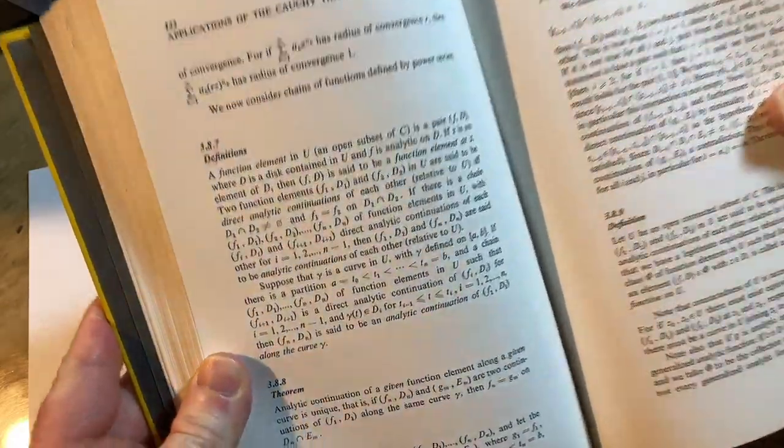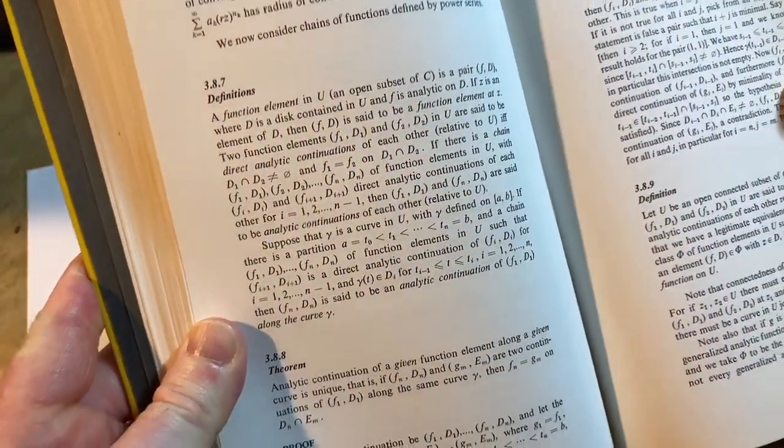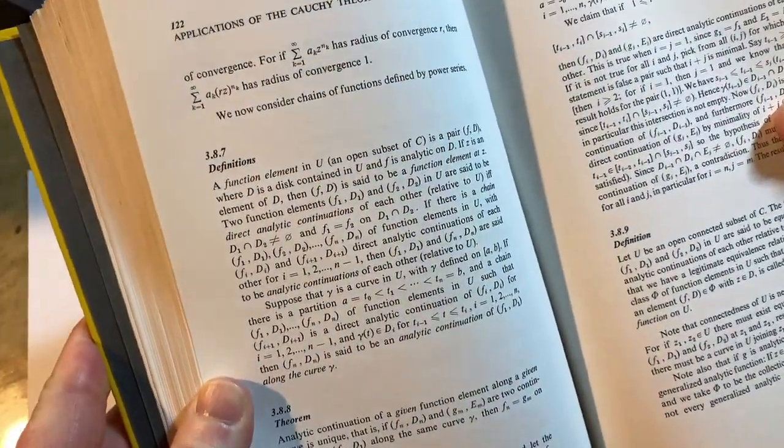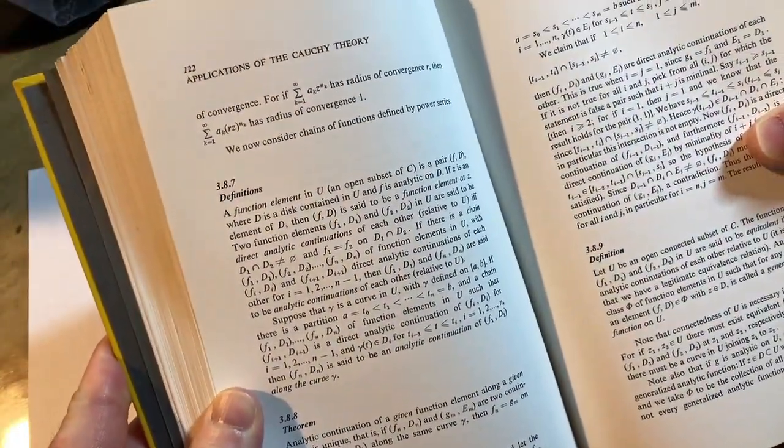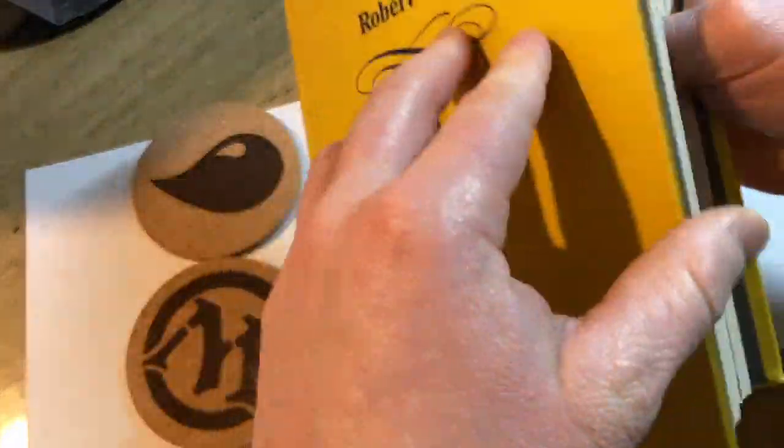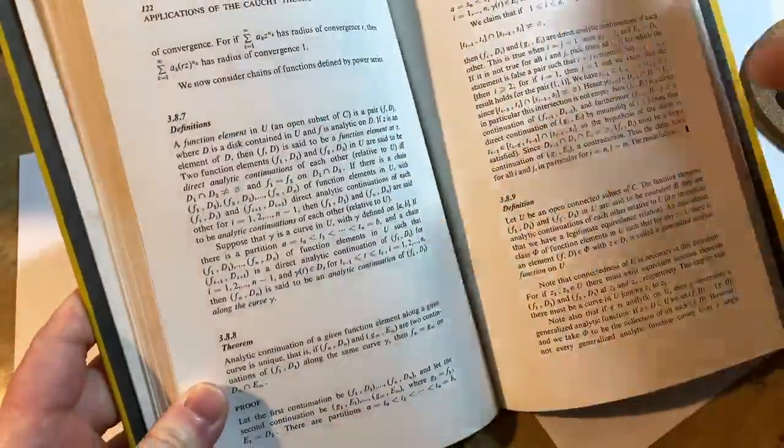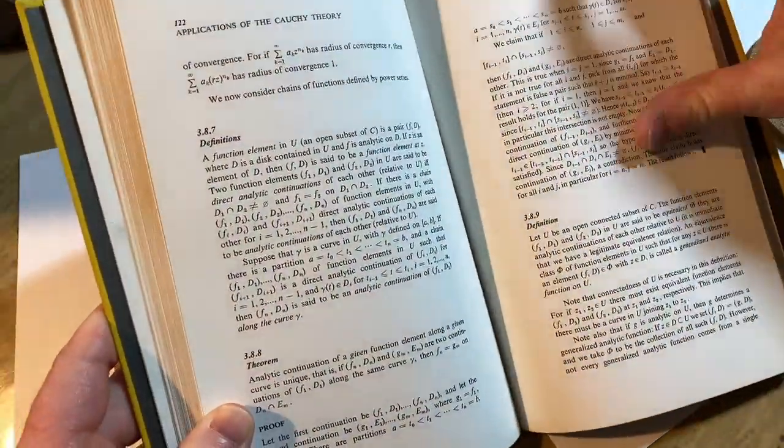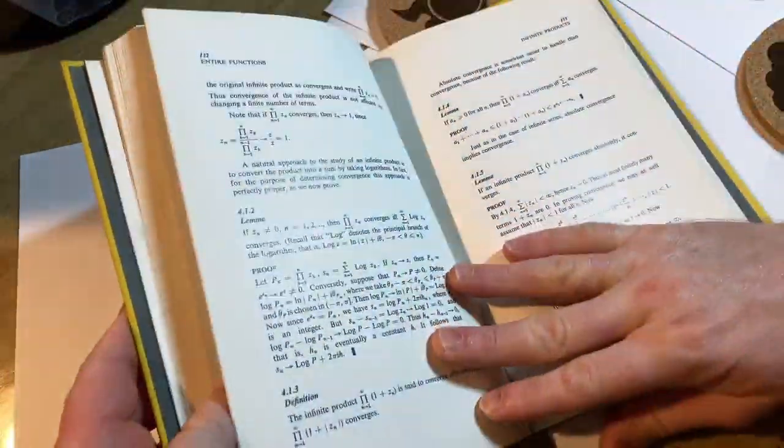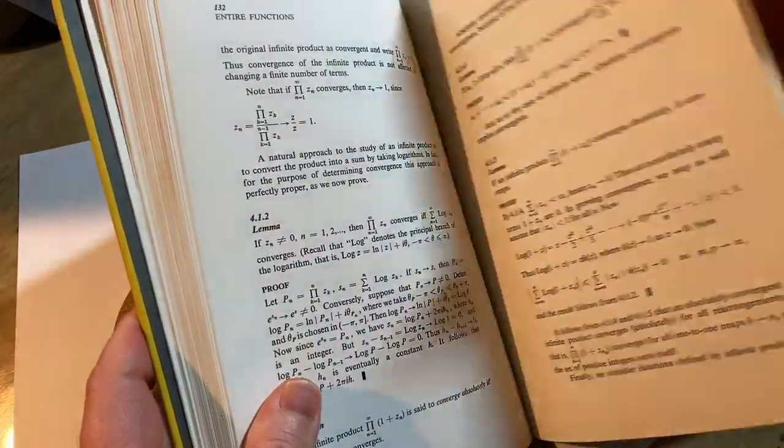And then us people, us mortals, are, you know, blessed with the fact that other people who have come before us and have, you know, studied math intensely like this are, you know, they have presented to us in books like this. Yeah. I don't know. Books are a wonderful thing. A wonderful thing.